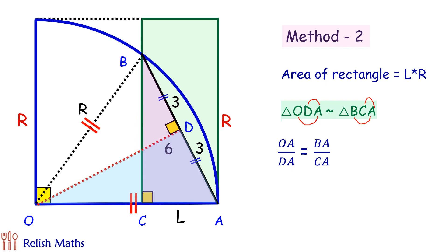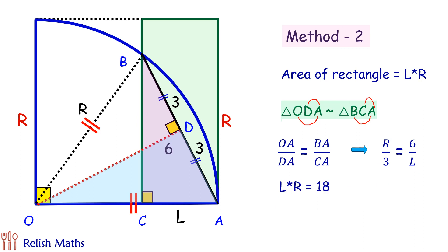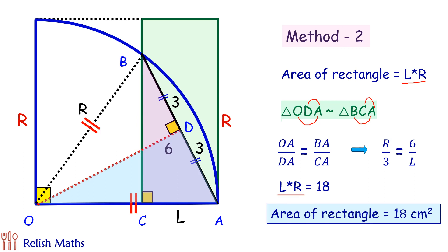Putting in the values: OA is the radius R and DA is 3, so R/3 = BA/CA = 6/L. Solving, we get R × L = 18. Since L times R is the area of the rectangle, the area of the rectangle is 18 cm².